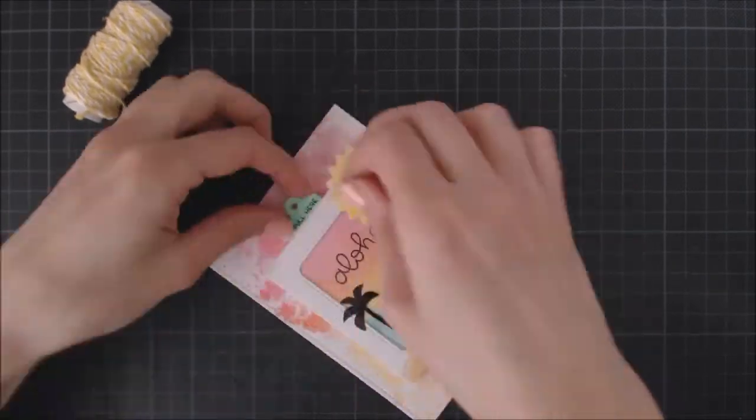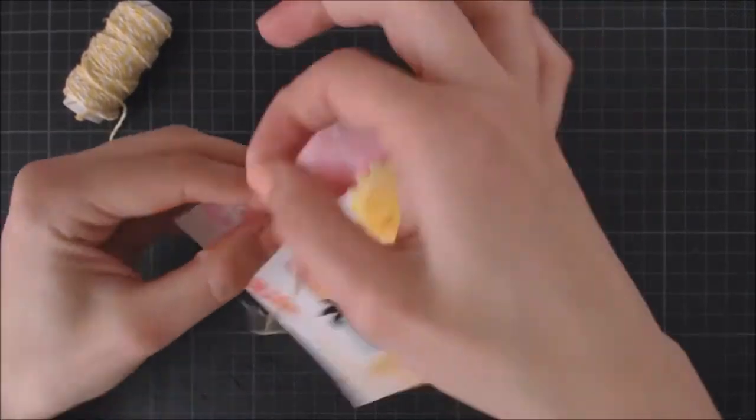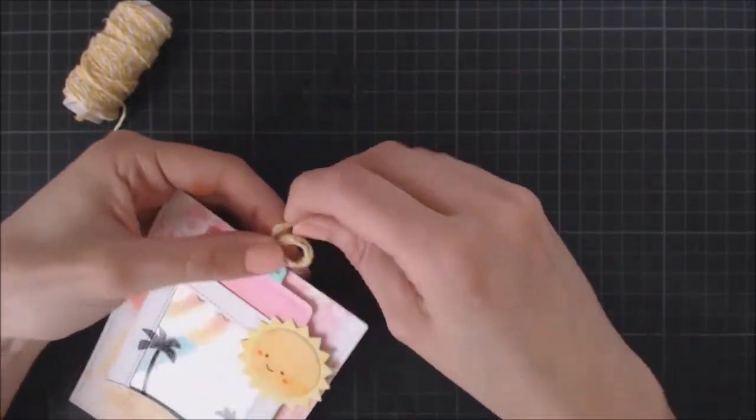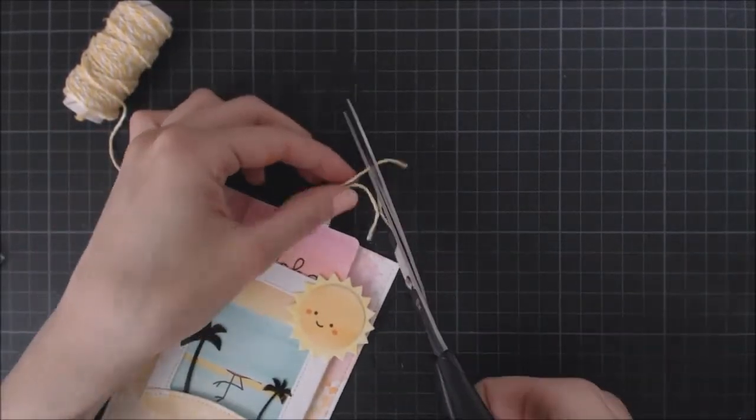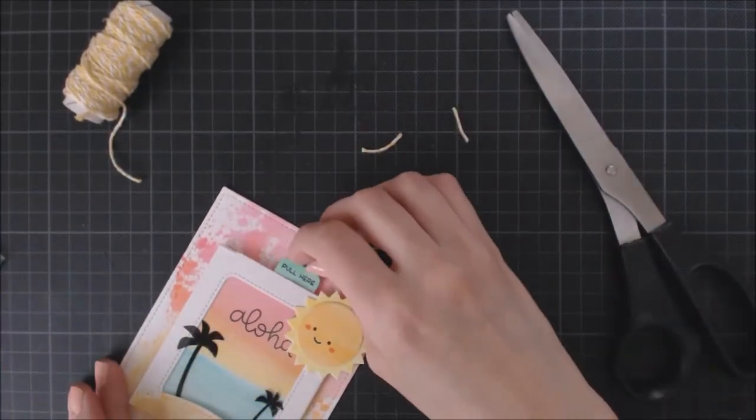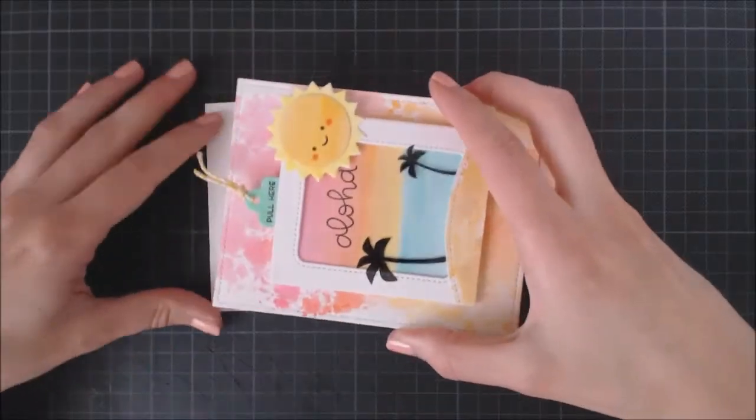To finish off the card I'm adding a little piece of yellow twine to the tab slider to make it easy for the recipient to pull out the tab and then I'm adhering everything to a base card.